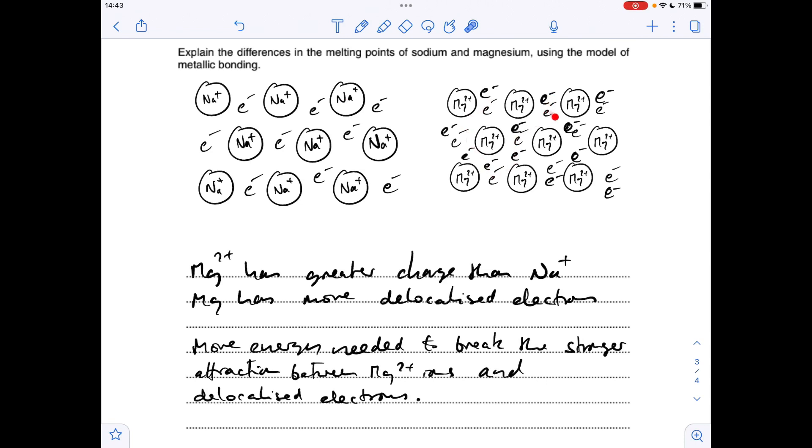Obviously you're going to have more delocalised electrons, so more energy's going to be needed to break the stronger attraction between the Mg2+ ions and those delocalised electrons, and that's the attraction that's got to be broken to melt any metal.